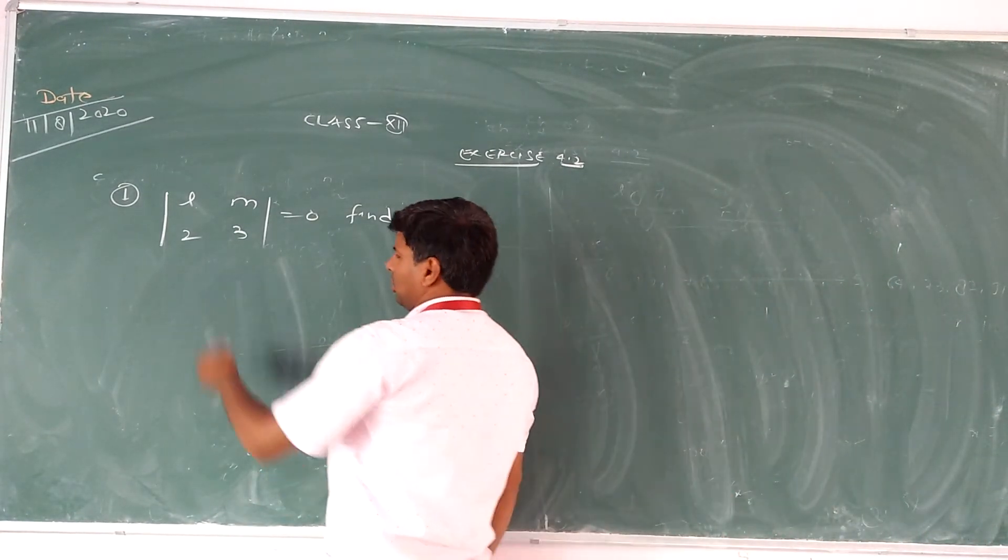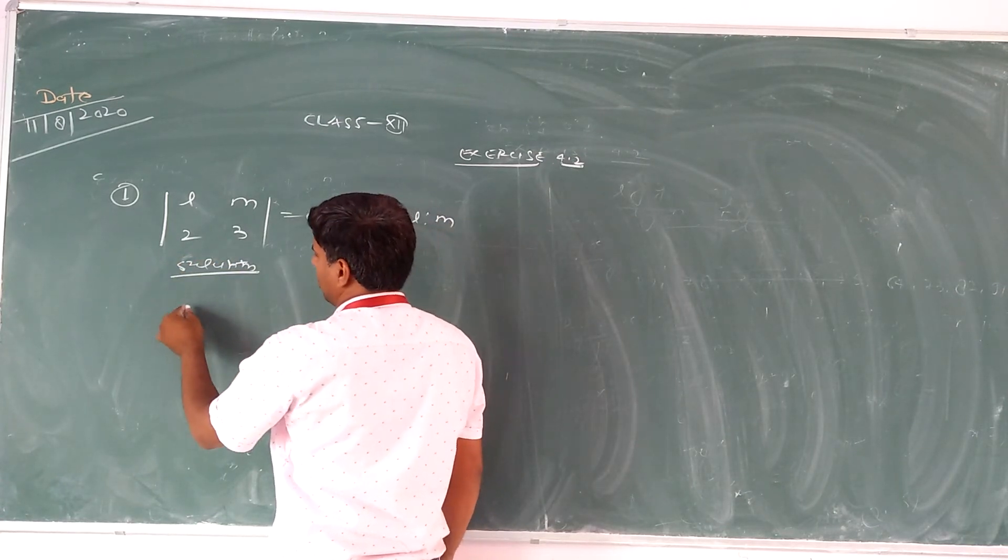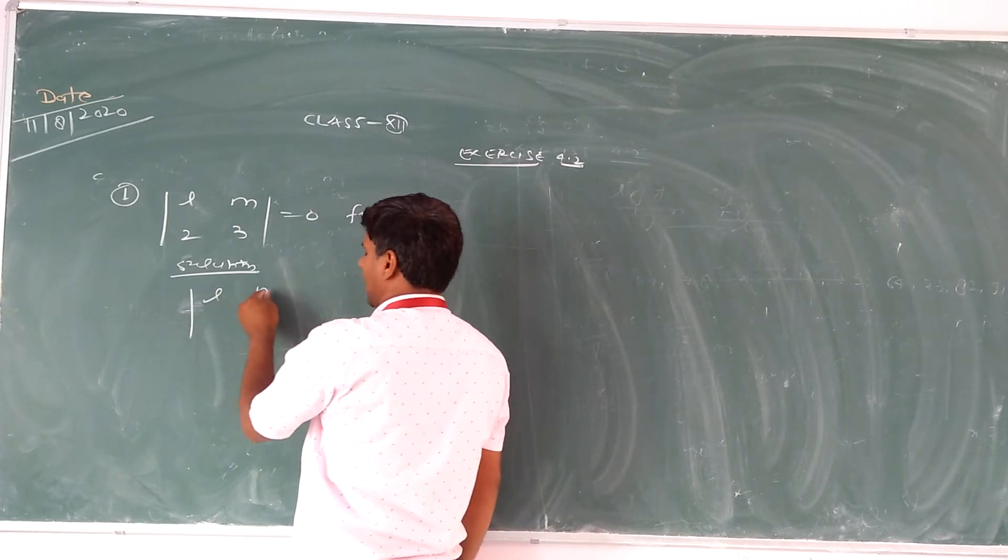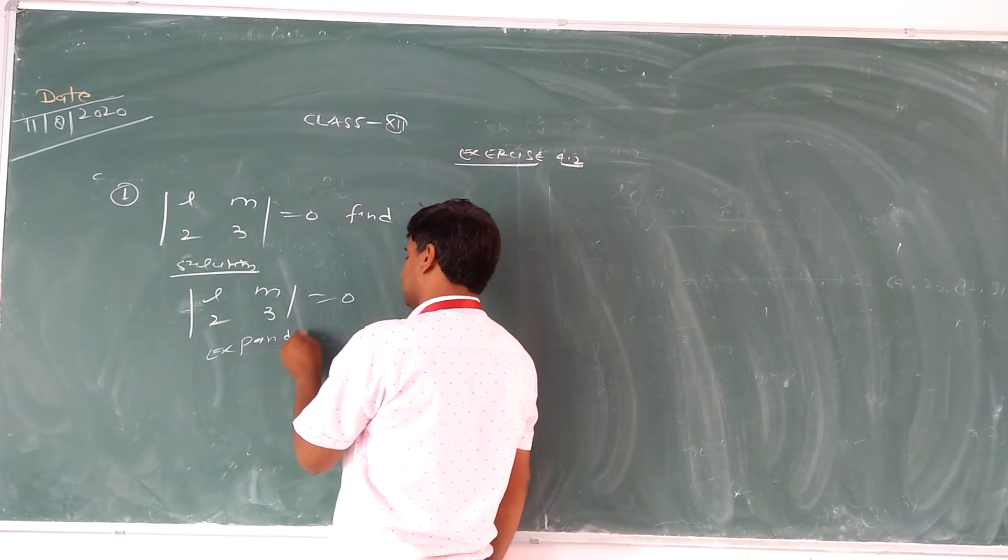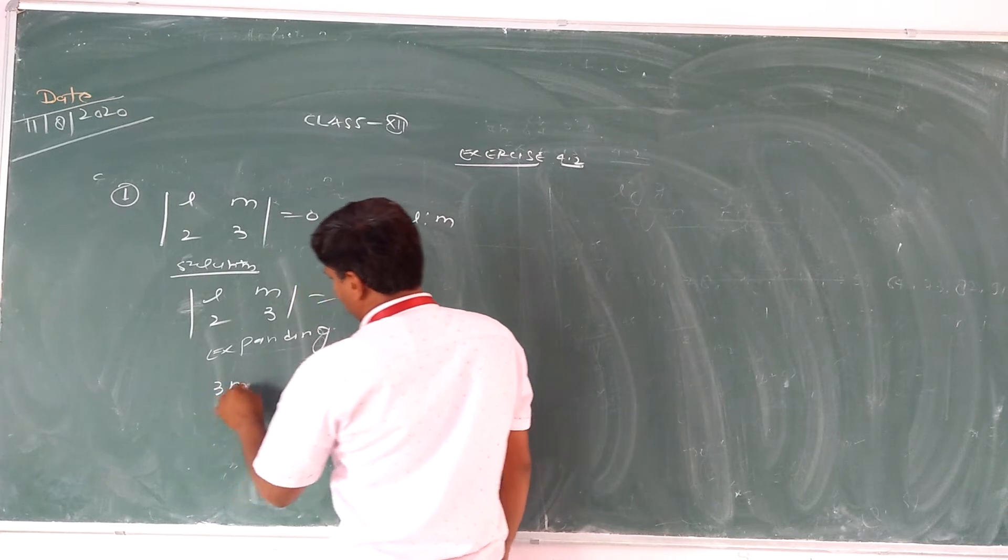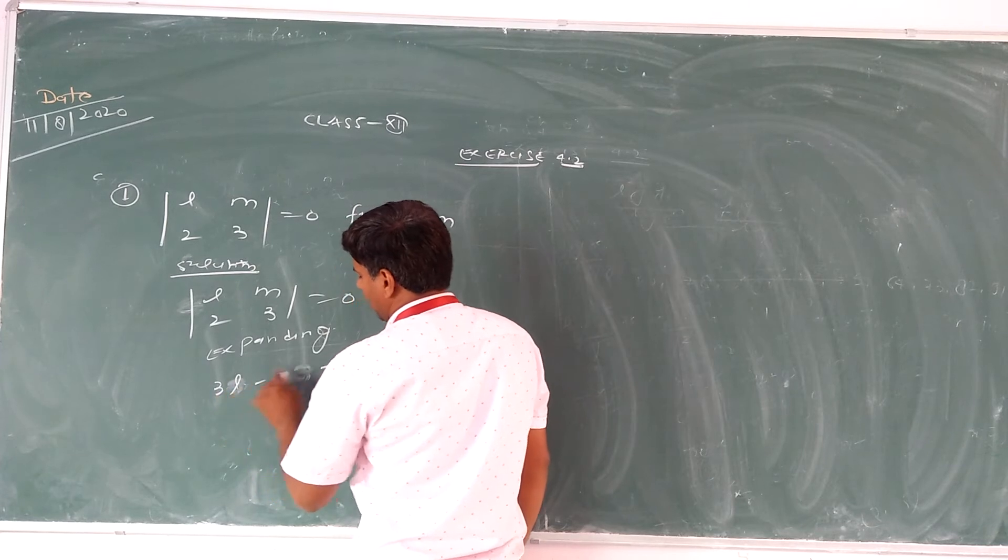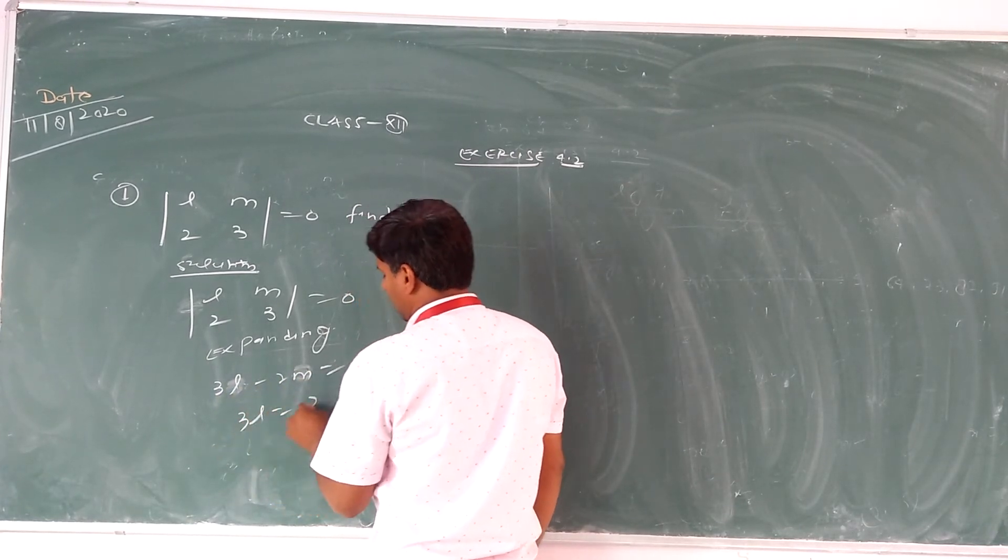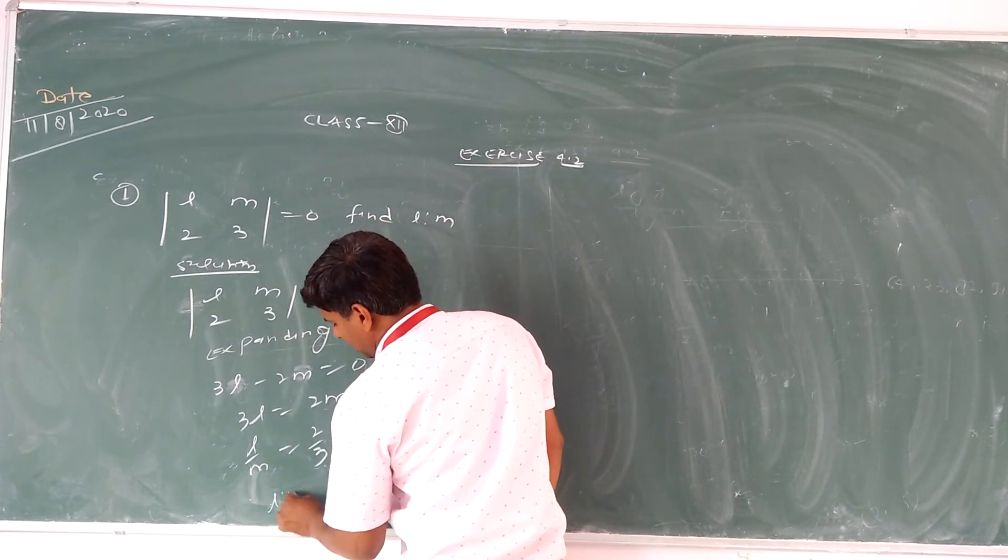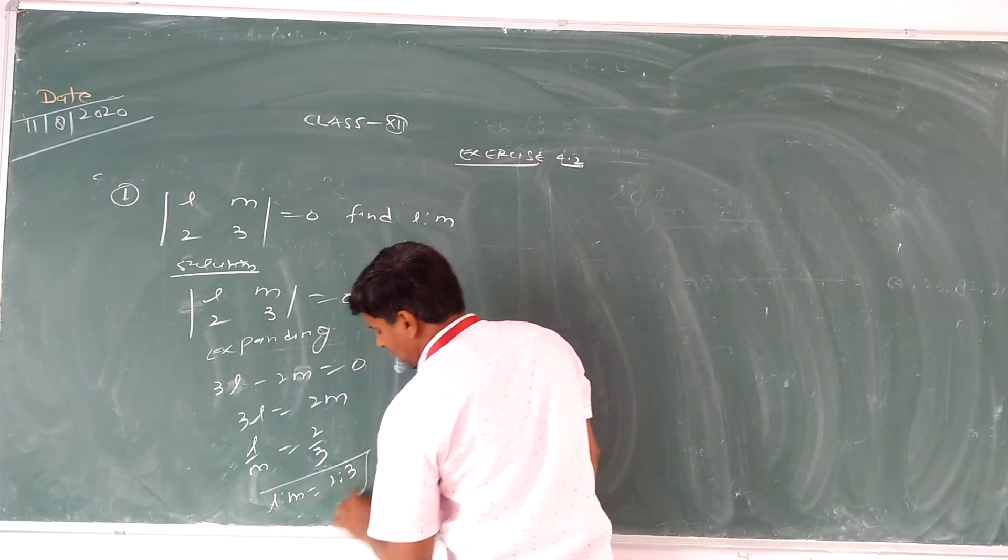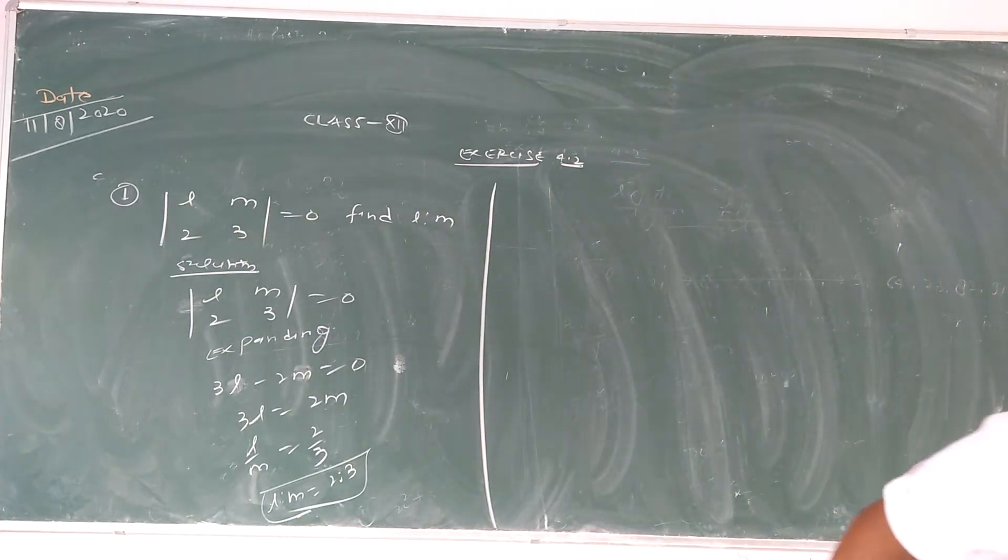So first question of exercise 4.2: evaluate the determinant. We have 2, 3, -1; -1, 2, -1; 3, 4, 1. So by expanding, 2 times (2 - (-4)) minus 3 times (-1 - (-3)) minus 1 times (-4 - 6). That is 12 + 6 - 10 equals 8.